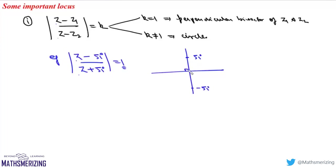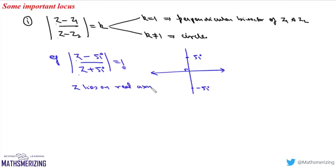The perpendicular bisector of 5i and -5i is nothing but the real axis, so this z lies on the real axis.